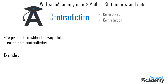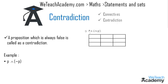Let me explain this concept with an example. We have a compound statement p and not p. First let us draw a truth table of three columns. The first column shows the truth value for p, the second column gives the truth value for not p, and the last column gives the truth value for the compound statement p and not p.